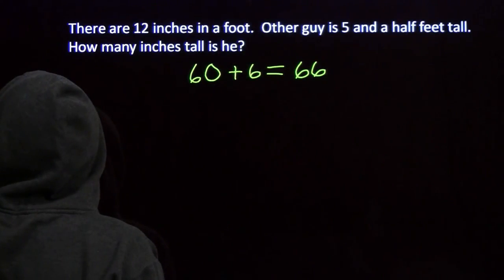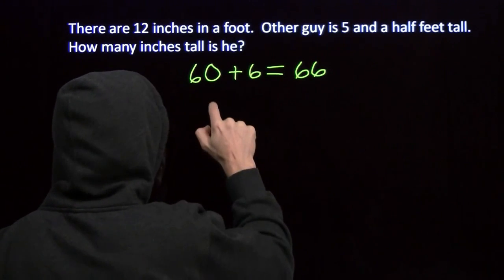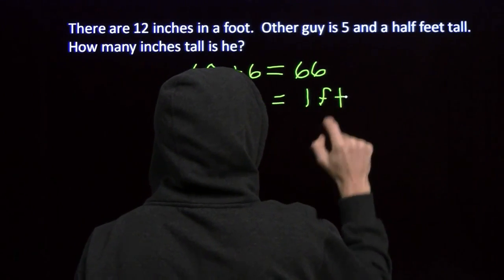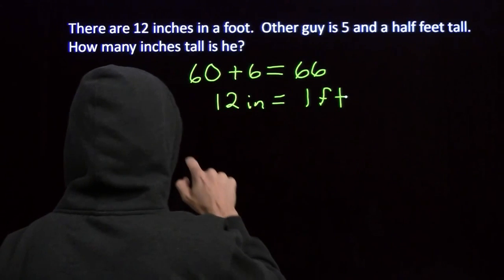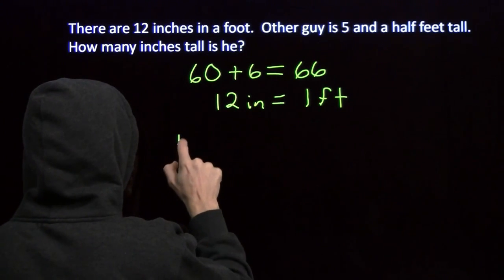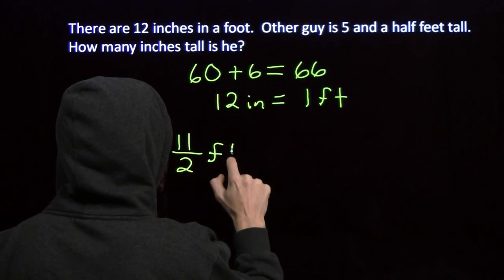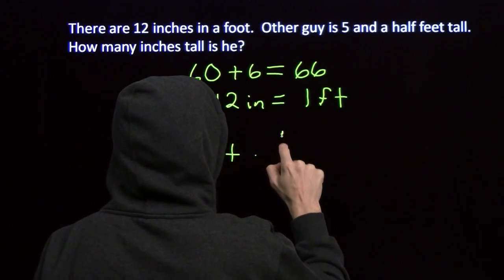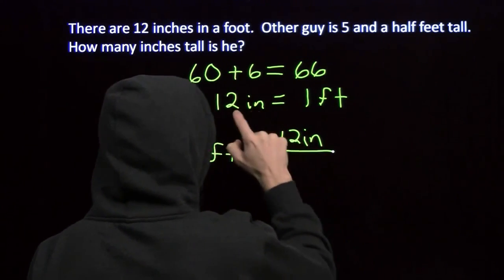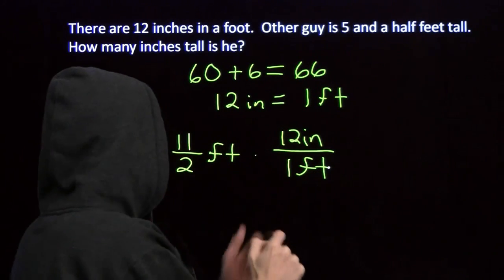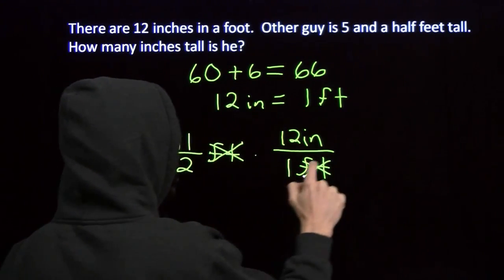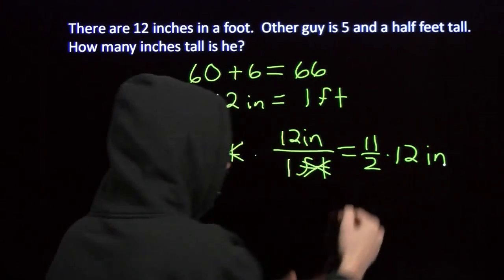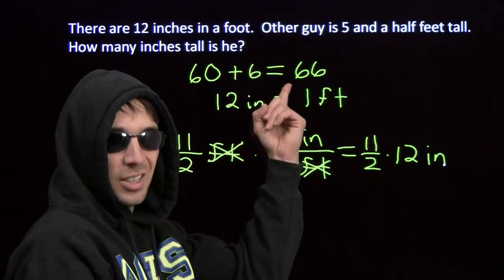Now let's go back and see how we could have done the feet-to-inches problem with conversion factors as well. We have 12 inches equals 1 foot, and we want to convert 5 and a half feet — that's 11 halves feet — into inches. Dividing both sides by 1 foot gives 12 inches over 1 foot. The feet cancel, and we're left with 11 halves times 12 inches. The 12 and 2 cancel to give 6, and 6 times 11 gives us 66 inches once again.